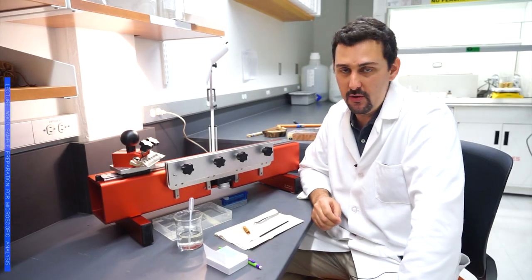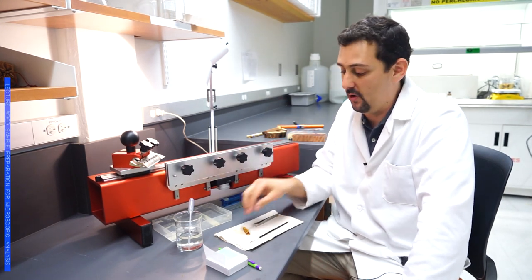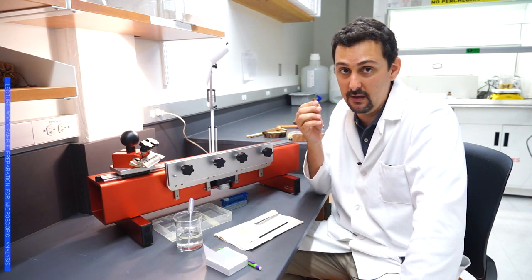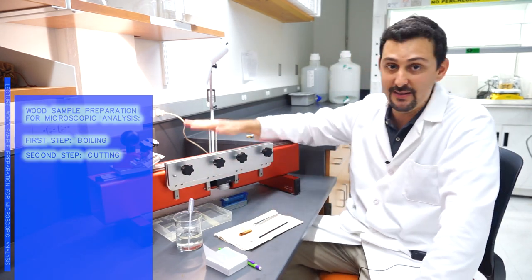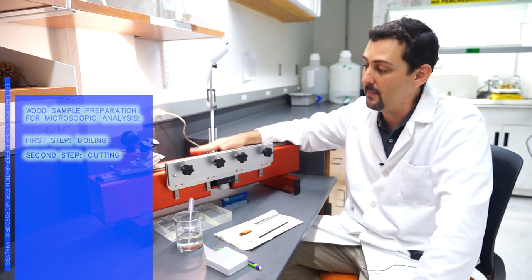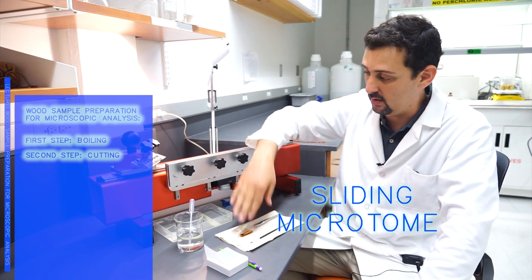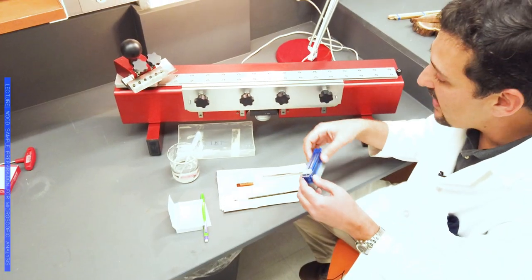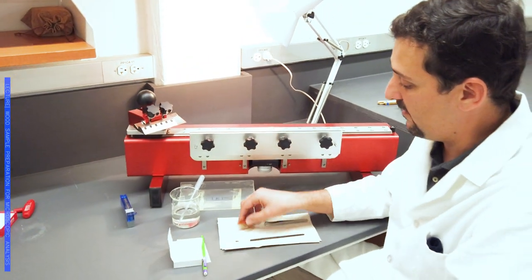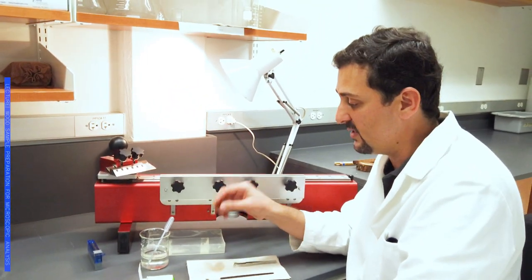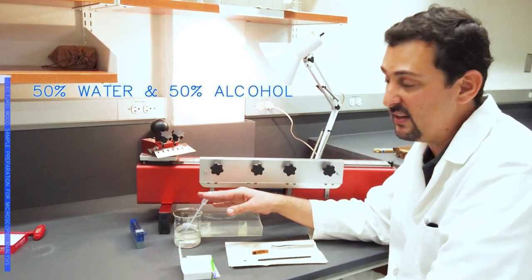Now I will show you the basic tools and instruments that we use to start our process of getting anatomical cuts from the wood. First of all, this big machine that you see here is what we call a microtome. In this case, it's a sliding microtome. We will put our sample on this platform here. Normally during the cutting process, we will just use a mix of water and alcohol 50-50.